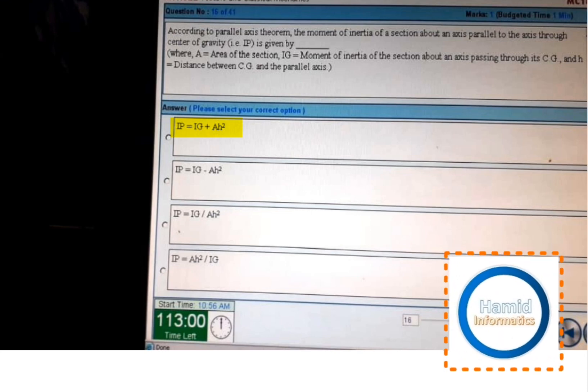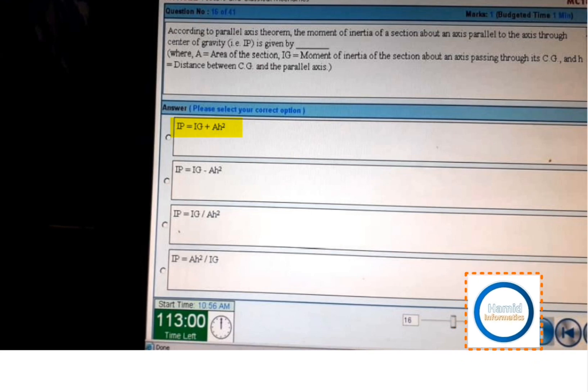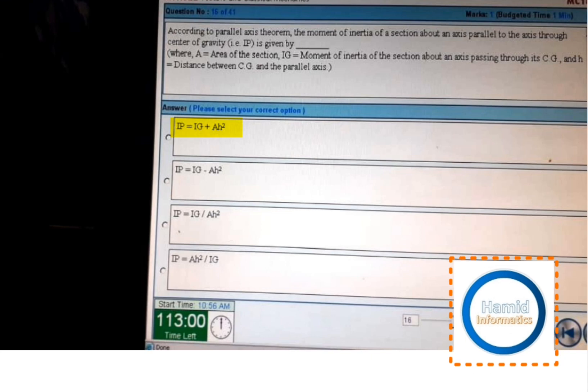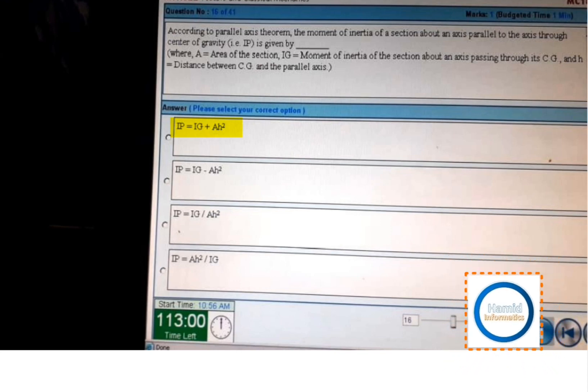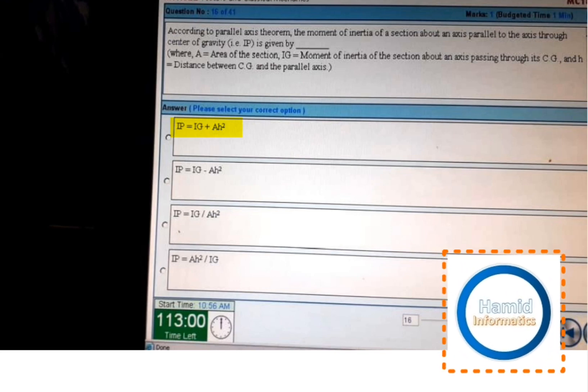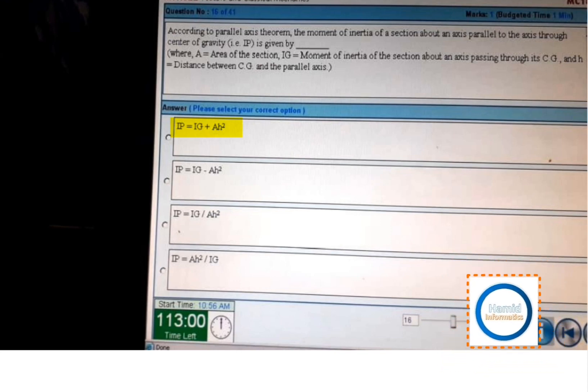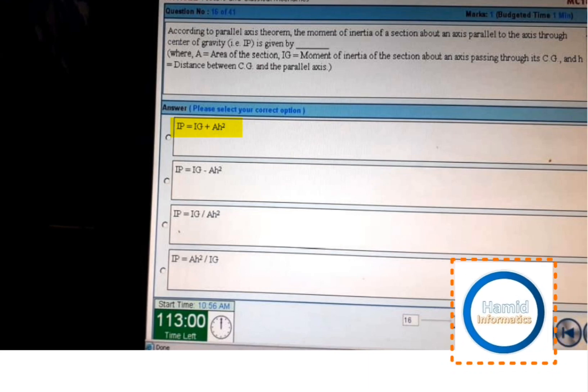Ip is given by, where A is area of section, Ig is moment of inertia of the section about an axis passing through its CG, and h is the distance between CG and the parallel axis. The answer is Ip is equal to Ig plus Ah square.